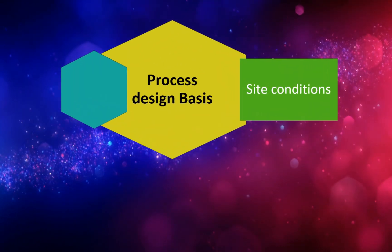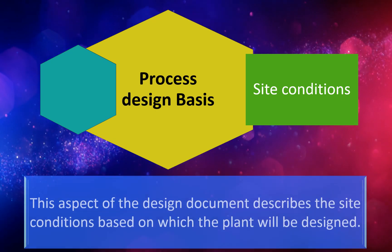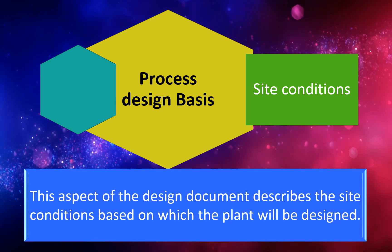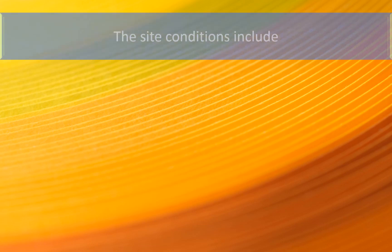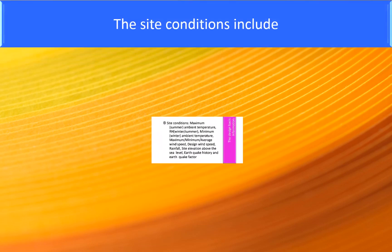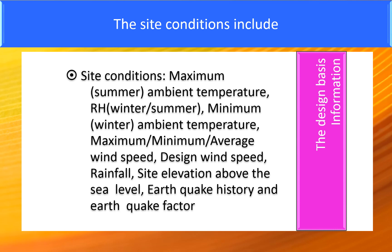Site conditions: This aspect of the design document describes the site conditions on which the plant will be designed. Site conditions include maximum (summer) and minimum (winter) ambient temperature, relative humidity for both winter and summer, maximum, minimum and average wind speed, design wind speed, rainfall, site elevation above sea level, and earthquake history and earthquake factor.